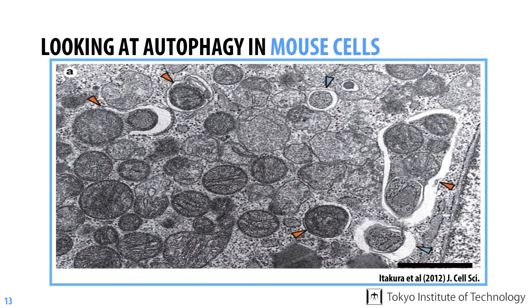Meanwhile, if we look inside this mouse cell that has been treated with a drug that impairs the function of mitochondria, we find that damaged mitochondria are selectively engulfed by autophagosomes, as marked by the orange arrowheads.